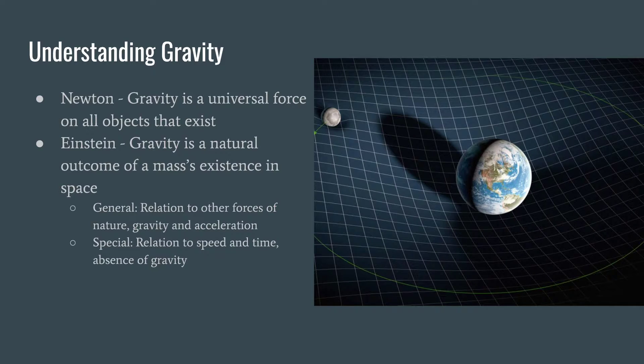Earth and the moon, for instance, as described by this picture. And then he had two theories: general, which is the relation of other forces of nature, gravity and acceleration, and then special, which is the relationship to speed and time in the absence of gravity. Now, special is a little bit strange because we're talking about gravity and it's in the absence of it, but it is something that's very important to know.